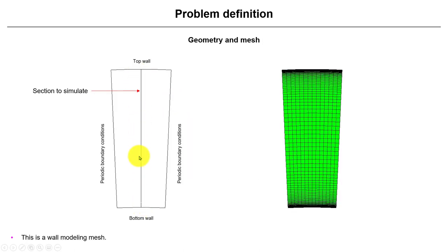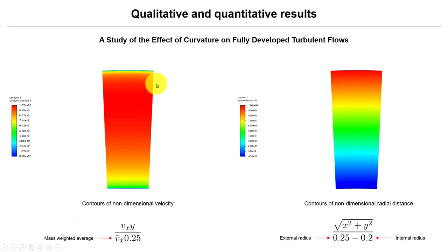See that we have a small section of that pipe. So here we're going to do the sampling, the velocity sampling, and then we have just the flow going this way. See that we have a nice mesh, a wall-resolving mesh. So this should be a wall-resolving mesh.